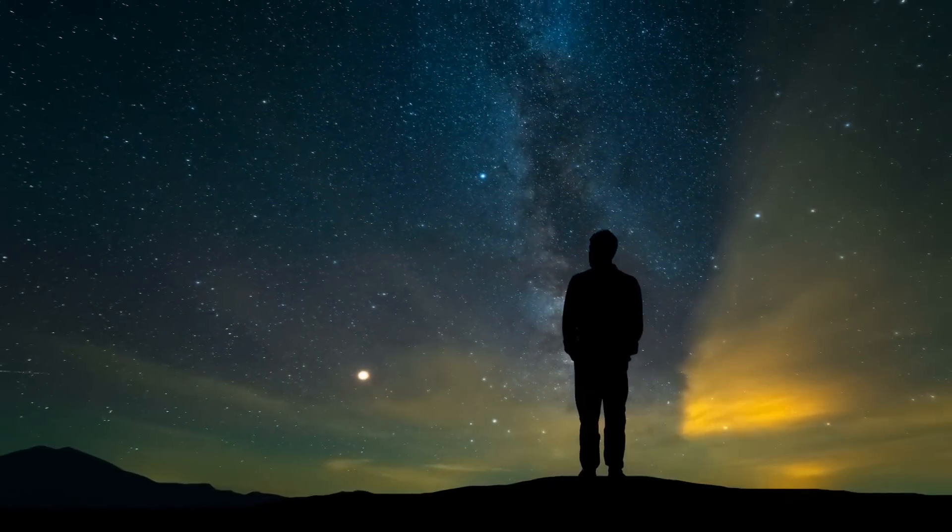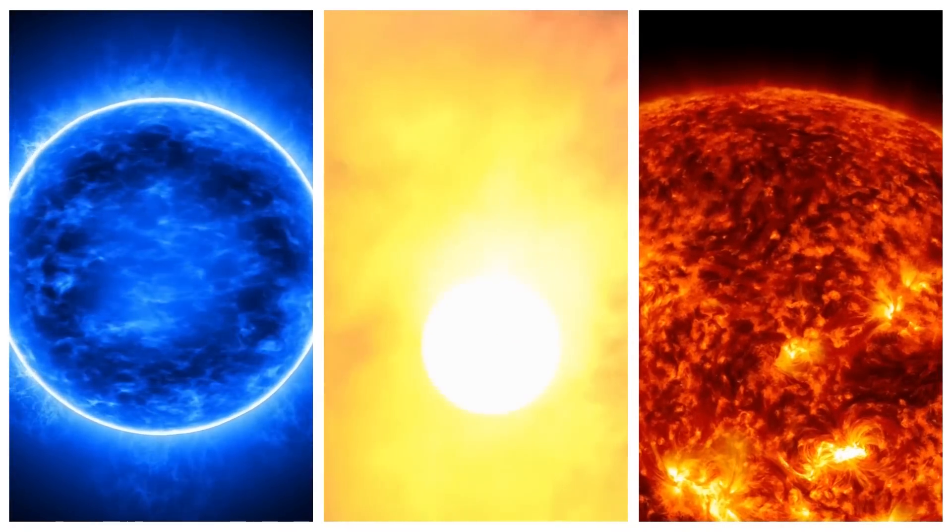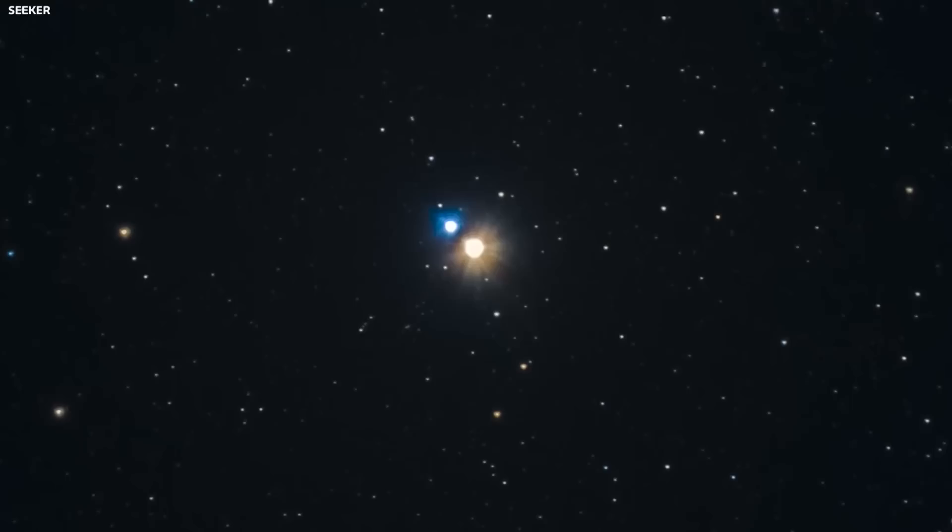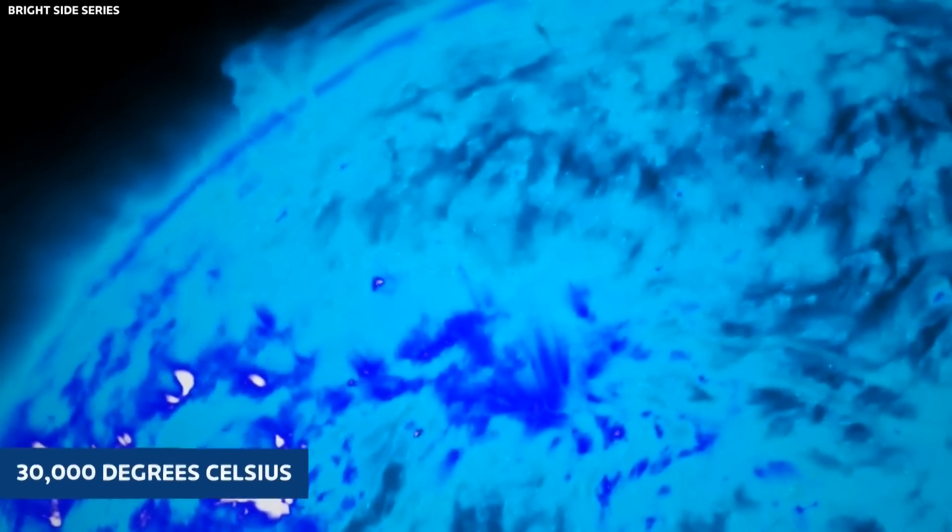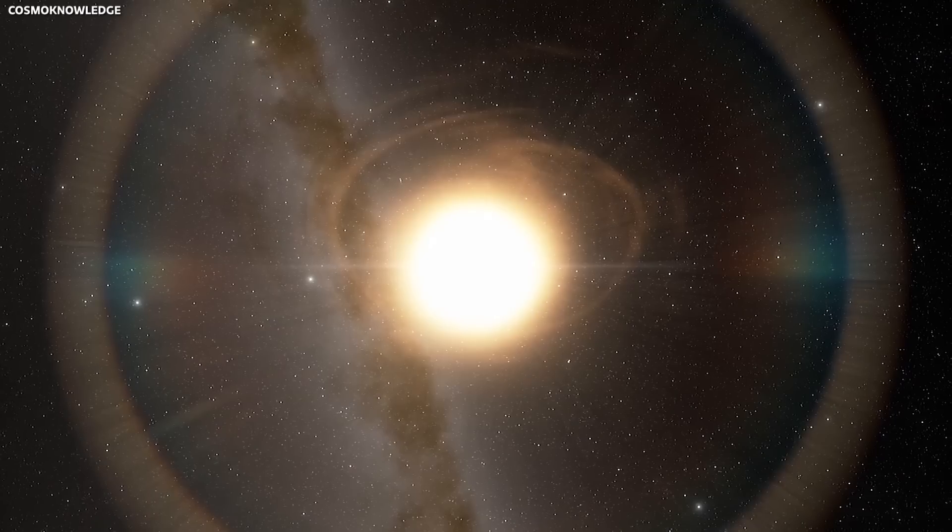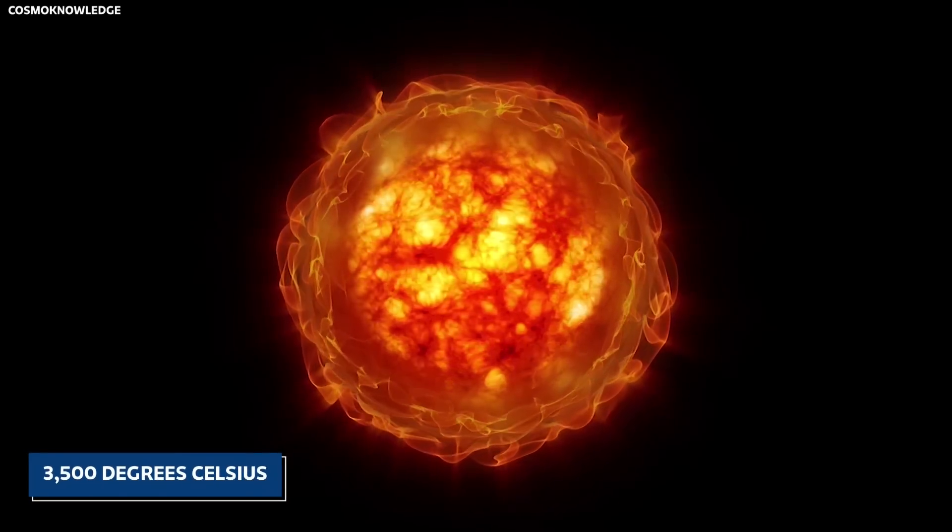Why are some stars blue, others yellow and some, like Betelgeuse, a brilliant shade of red? The color of a star is directly related to its temperature. Blue stars are the hottest, with temperatures reaching up to 30,000 degrees Celsius, while red stars are cooler, with temperatures around 3,500 degrees Celsius.